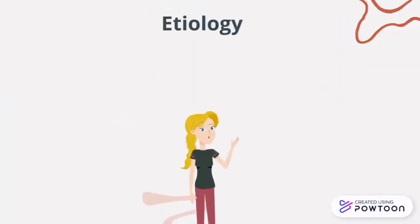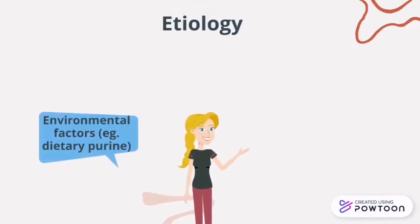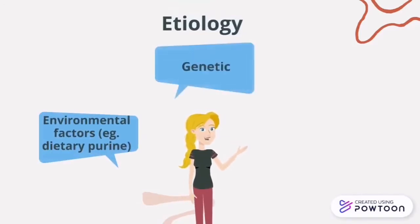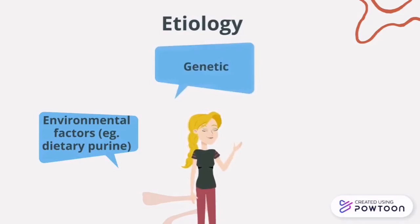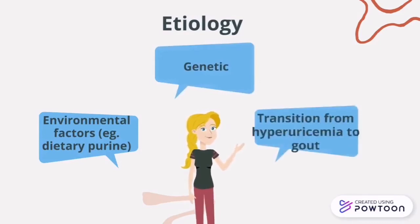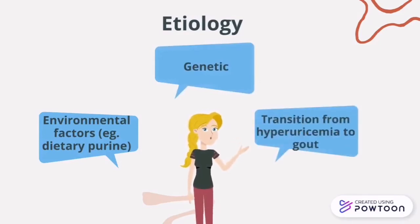For the etiology of gout: first is environmental factors, for example dietary purine; second is genetics; and third is the progression from hyperuricemia to gout.